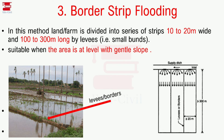The next method is border strip. The land is divided into a series of strips, separated by levees on the left and right sides. Each rectangular strip is 10–20 m wide and 100–300 m long. The levees are at level with a gentle slope. Strips are separated from each other, and border strip flooding is suitable for crops like rice and wheat.